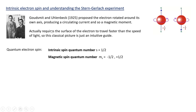Instead of the classical picture, we introduce a new quantum property called electron spin. The intrinsic spin quantum number is s = 1/2, as opposed to the orbital quantum number l which takes integer values 0, 1, 2, 3, ... The magnetic spin quantum number m_s goes from −s to +s, giving m_s = −1/2 and +1/2, just as the orbital quantum number goes from −l up through +l.